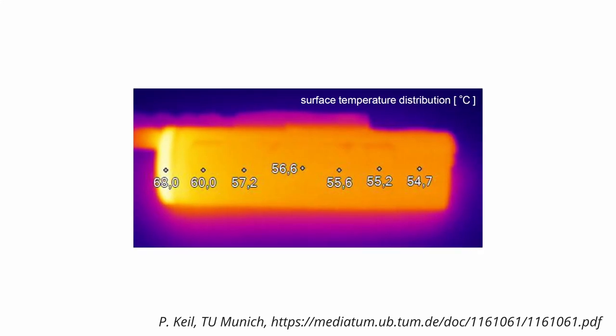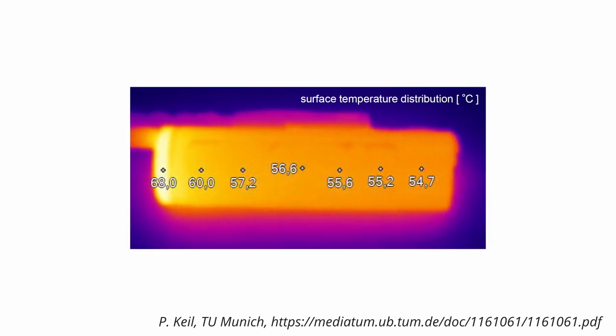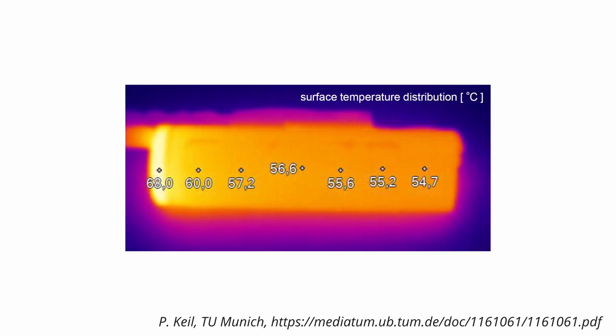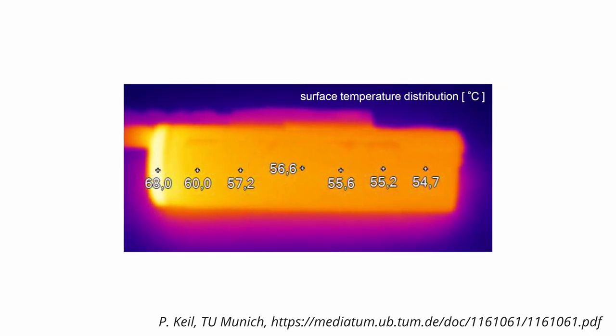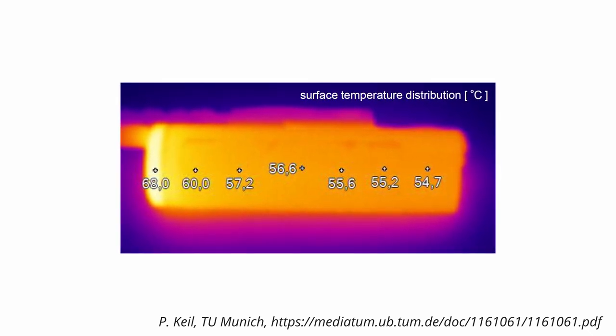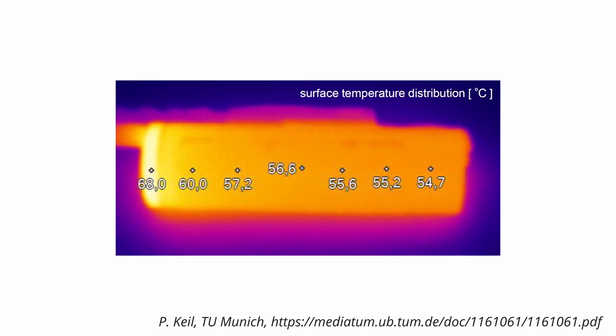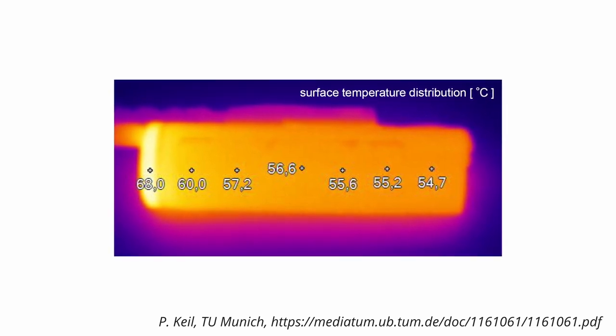If you take a look through a thermal camera while exposing the cell to a short with an initial current of 50A, you will see that the cell top header has a higher temperature than the rest of the cell, caused by the additional losses in the PTC. This transition to the high resistance state happens typically on a timescale of one second, so it's usually fast enough to prevent damage to the cell.